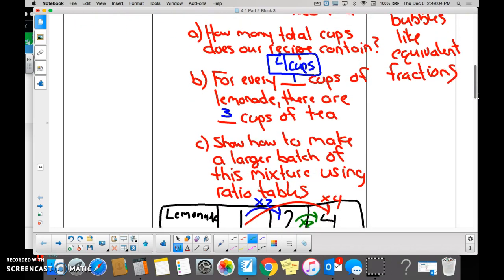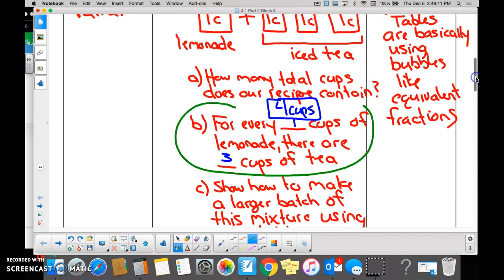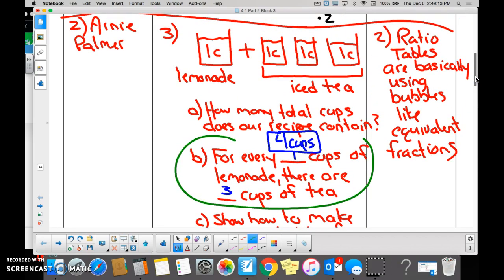And then to understand the problem, we kind of put the problem into our own words. We said, for every one cup of lemonade there are three cups of iced tea. Yes, no? For every one cup of lemonade, we have three cups of iced tea.